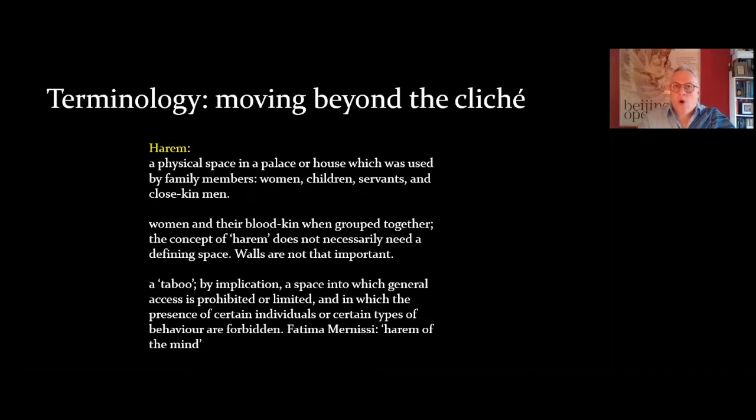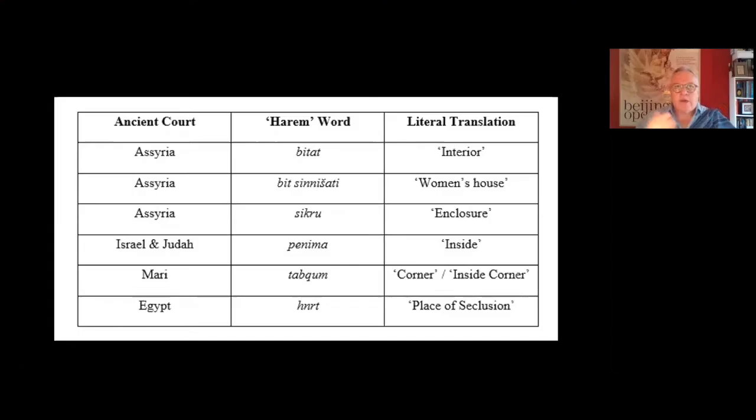Fatima Manisi, who is a wonderful anthropologist and sociologist of the Arab world, speaks of a concept of the Harim of the mind. That is to say, a kind of code of behaviour which makes you behave in a certain way — not getting involved with people that you don't know, not speaking to women who are not part of your family, not inviting men into the home if they're not belonging to you. In the ancient world, we have lots of words that seem to suggest Harim, and interestingly all of them are kind of spatially aware.